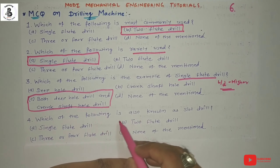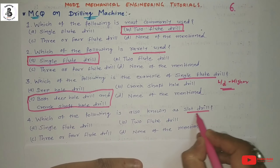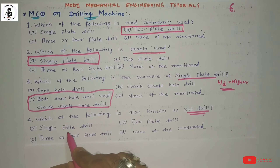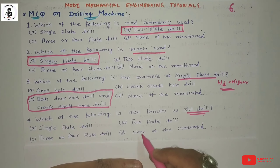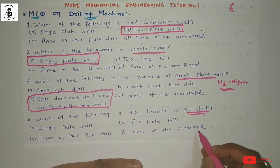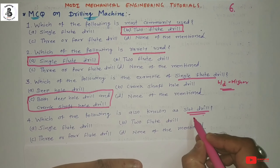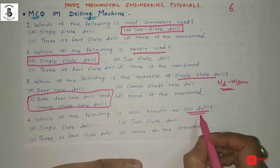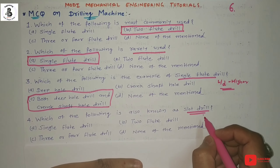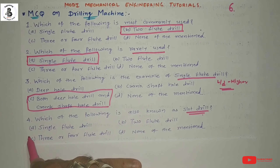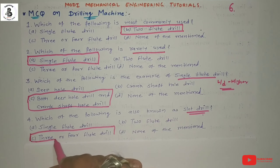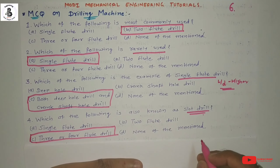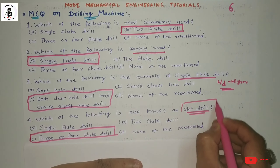Question four: Which of the following is also known as slot drill? Option A single flute drill. Option B two flute drill. Option C three or four flute drill. Option D none of the above. For making a slot by drilling, three or four flute drills are used. So option C, three or four flute drill, is also known as slot drill.